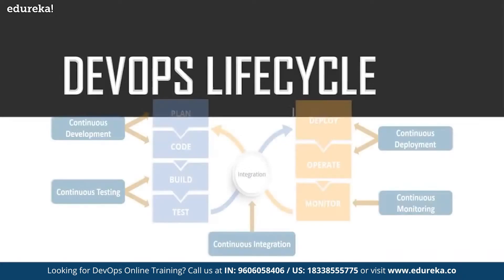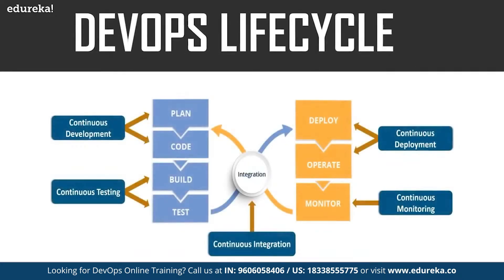As you can see in this diagram, these are the various phases of the DevOps lifecycle: continuous development, continuous testing, continuous integration, continuous deployment, and continuous monitoring. Now let us have a look at each of these phases one by one.